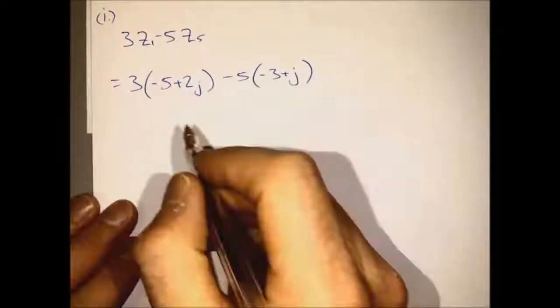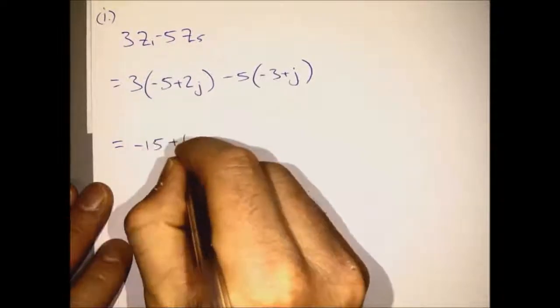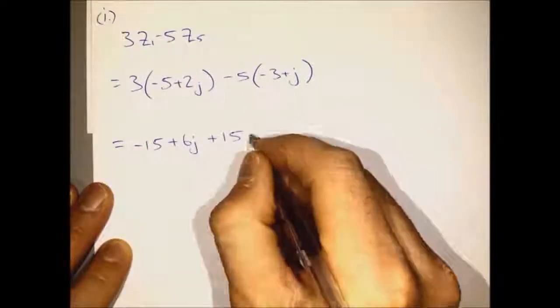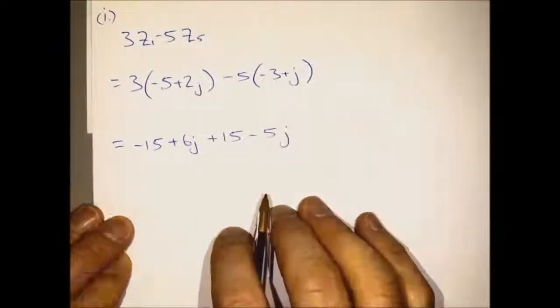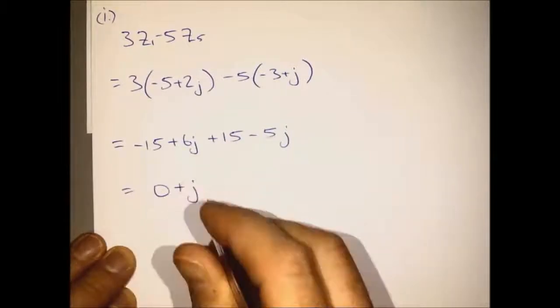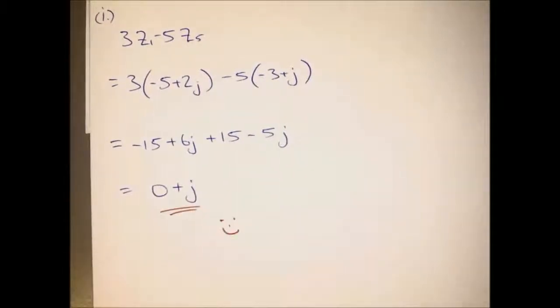3 times minus 5 will be minus 15. 3 times 2J is 6J, and so on. Then we'll tidy up, and that's our answer: 0 plus J.